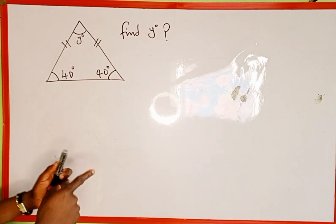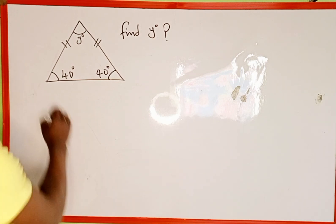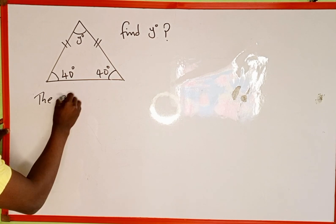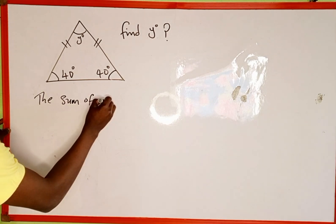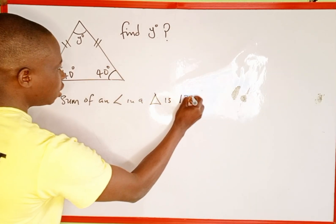And another thing you are going to recall is the sum of angles in a triangle is the same as 180 degrees. So the sum of angles in a triangle is 180 degrees.